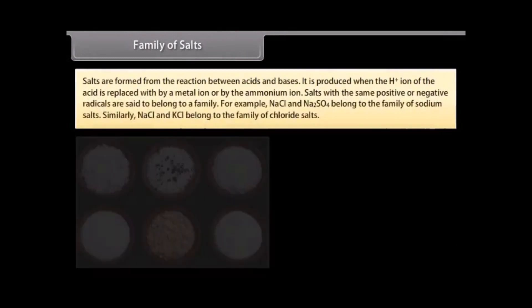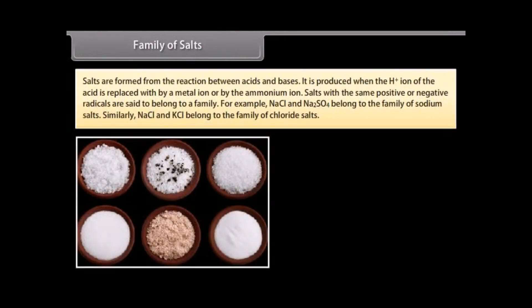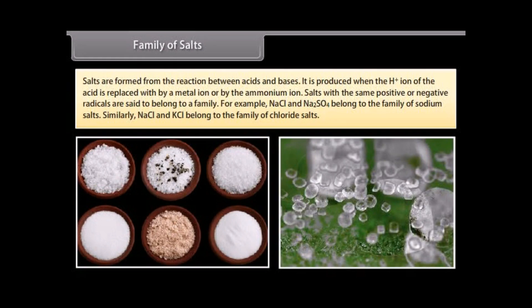Family of salts. Salts are formed from the reaction between acids and bases. A salt is produced when the H+ ion of the acid is replaced by a metal ion, the aluminum ion, or the ammonium ion. Salts with the same positive or negative radicals are said to belong to a family. For example, NaCl and Na2SO4 belong to the family of sodium salts. Similarly, NaCl and KCl belong to the family of chloride salts.